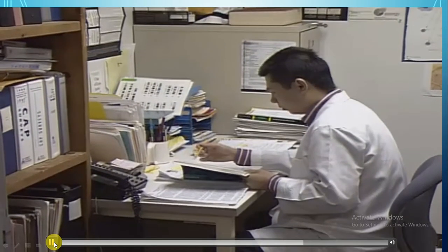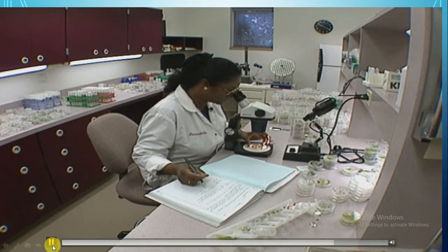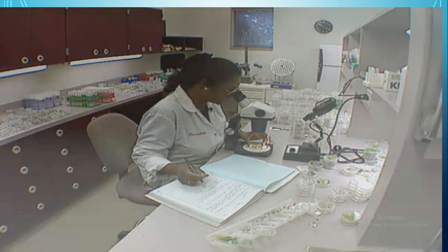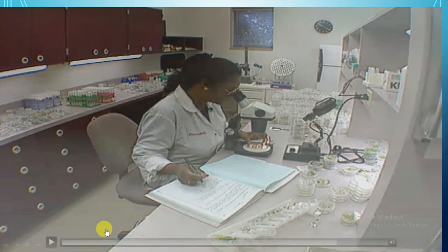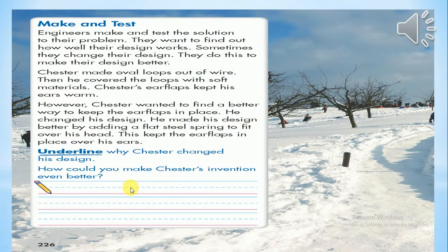Step number 6: engineers record what they have done. They write about their designs and may also draw and label them. You can write notes or make a video about the design so you don't forget it. Recording helps engineers remember what they have done. Sometimes engineers also share what they have done with others.